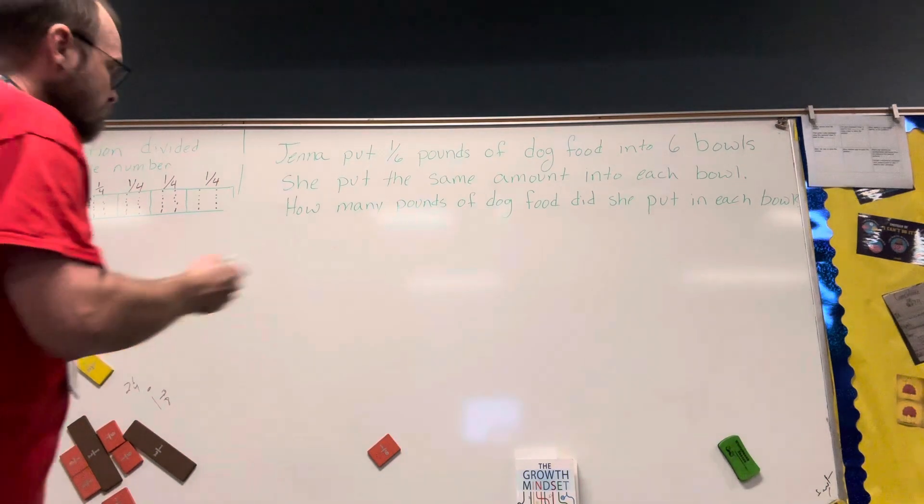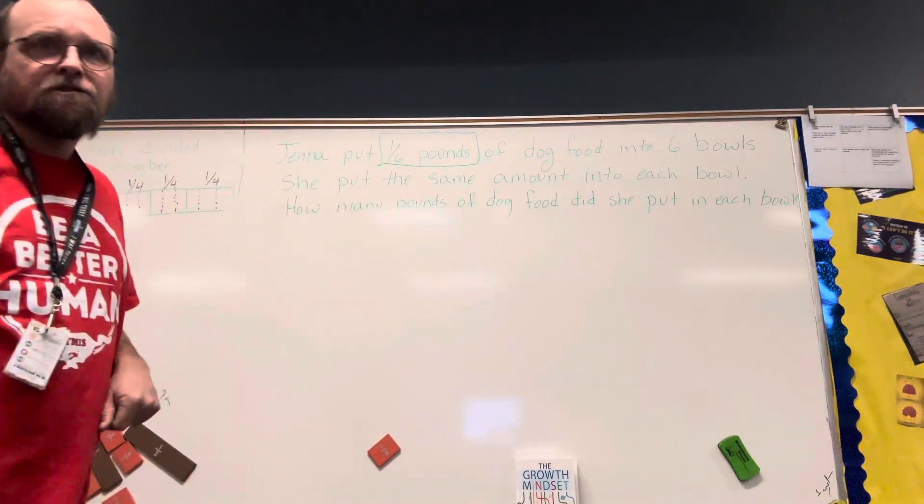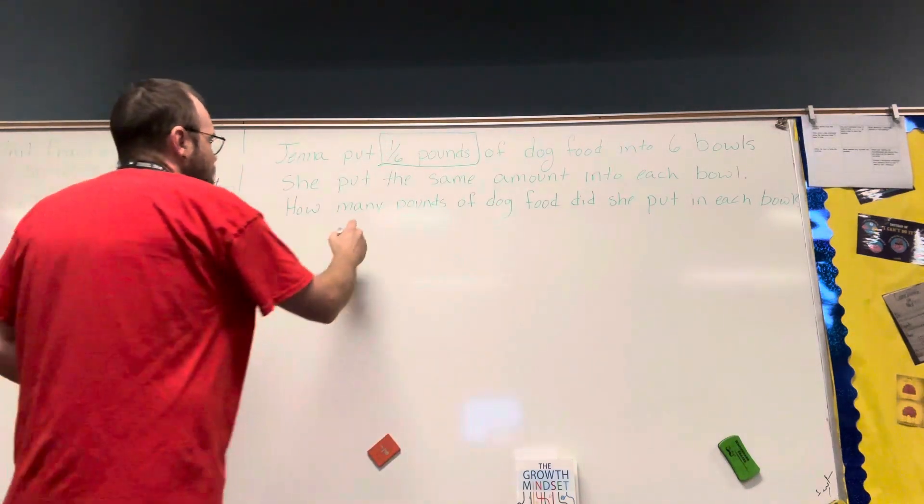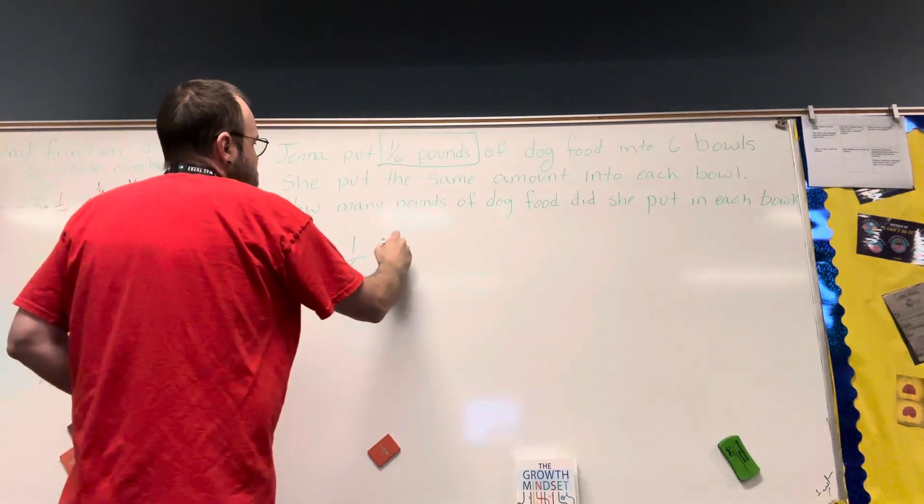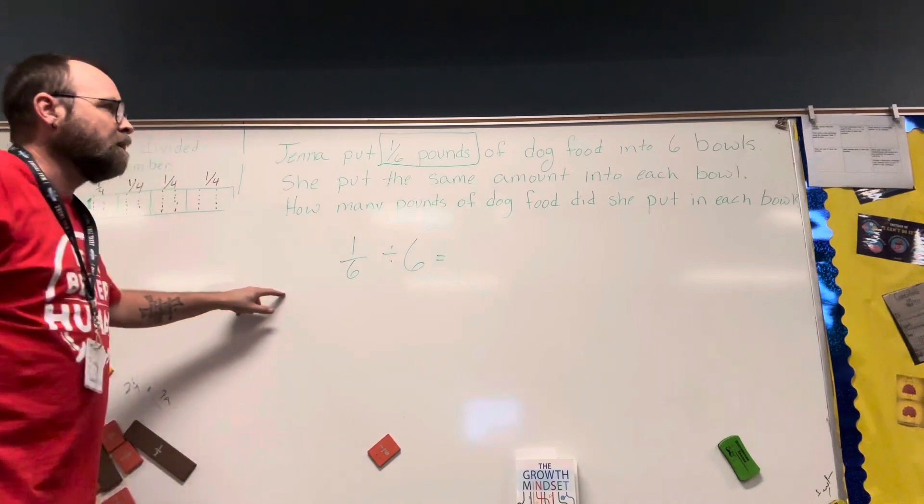Well, she's going to start with one-sixth. That's all she has. She can't put more than one-sixth in each bowl. So we have one-sixth divided by the number of bowls. One-sixth divided by six.